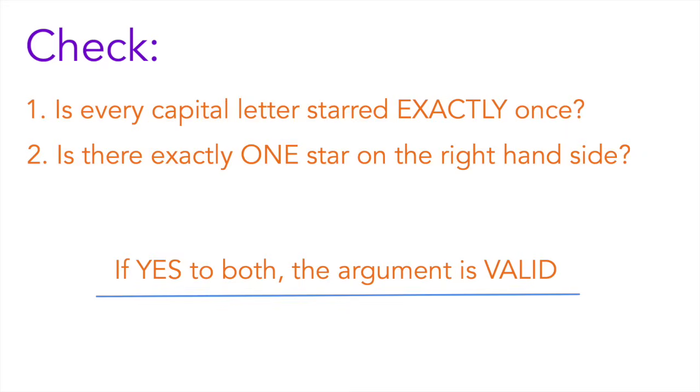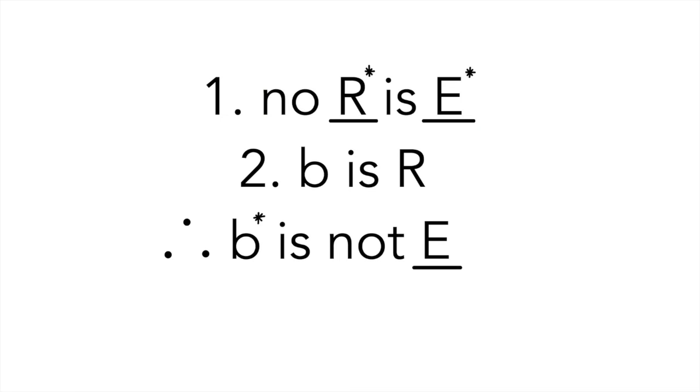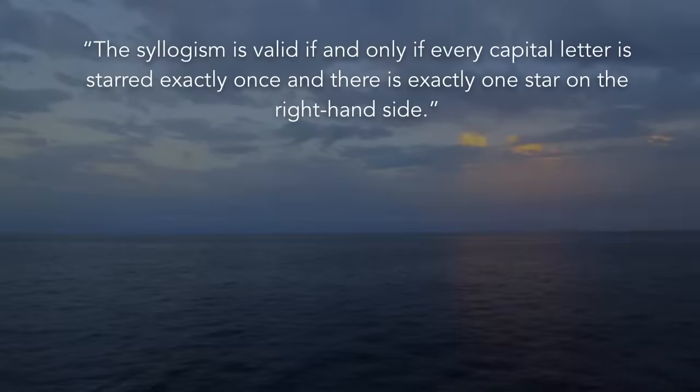Last step here, we check if every capital letter is starred exactly once, and then we check if there is exactly only one star on the right-hand side. So, checking over our example, we see that R and E, our only capital letters, are starred exactly once, so it passes that test. Next, we check if there is exactly one star on the right-hand side, and there is on the E in our first premise. And since it passes those two tests, the argument is valid. The syllogism is valid if and only if every capital letter is starred exactly once, and there is exactly one star on the right-hand side.